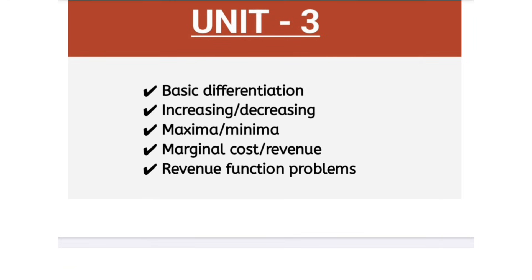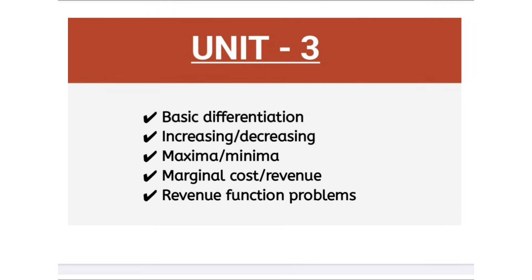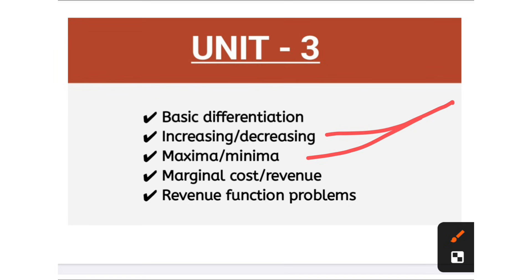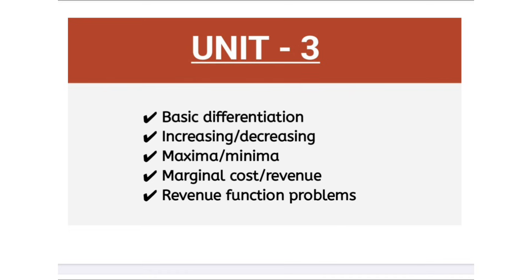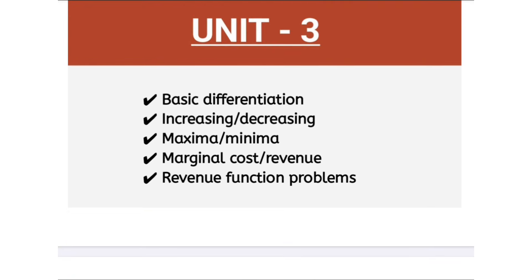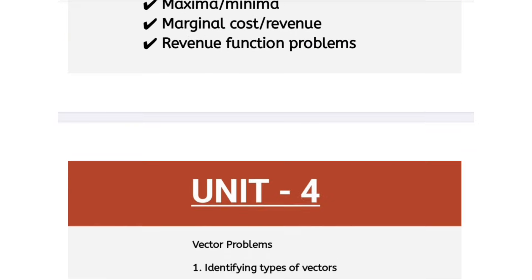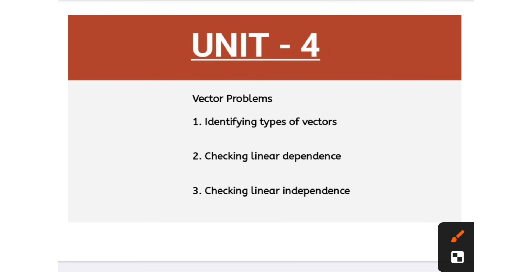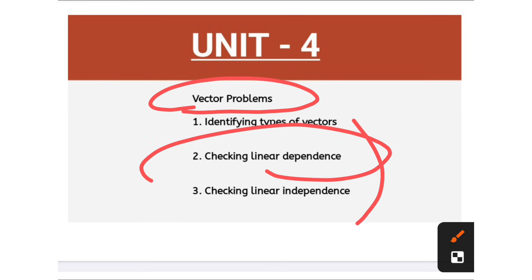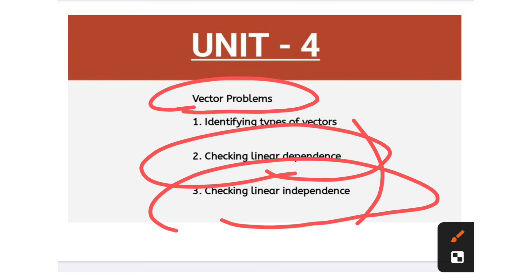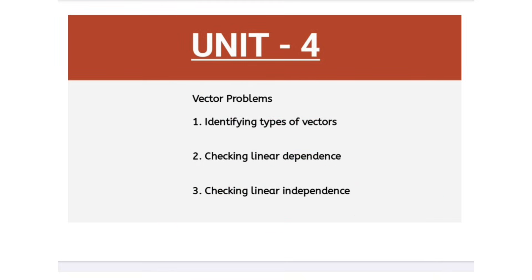In unit number three, the problematic methods include increasing and decreasing functions, maxima and minima, and basic differentiation — these are the most important problematic methods. The revenue function problems — we can expect the problematic related to that topic. In unit number four, we are discussing only the topic of vector problems: types of vectors, linear dependency, and checking linear dependency — these types of questions related to vectors we can expect.